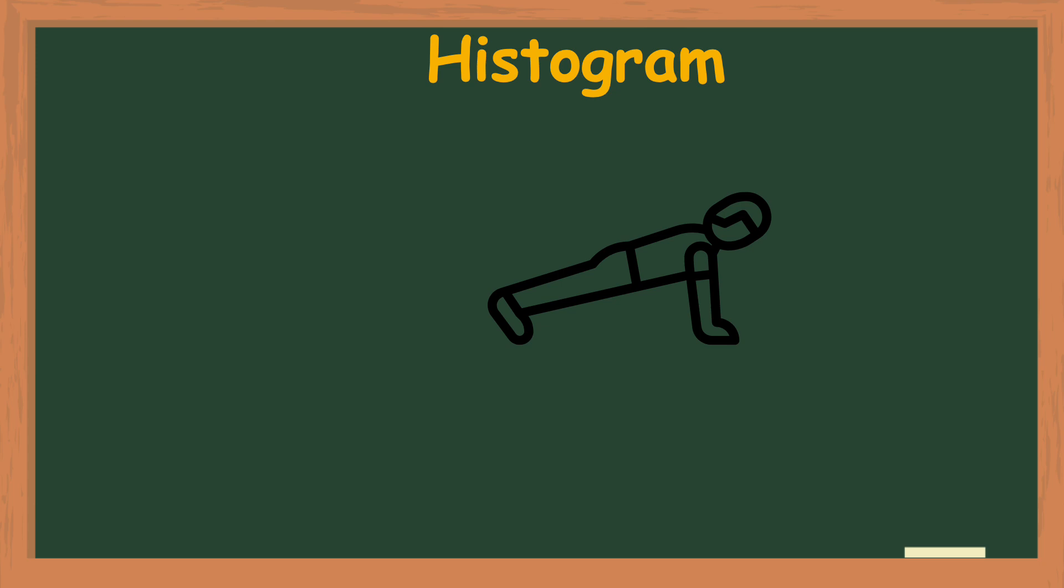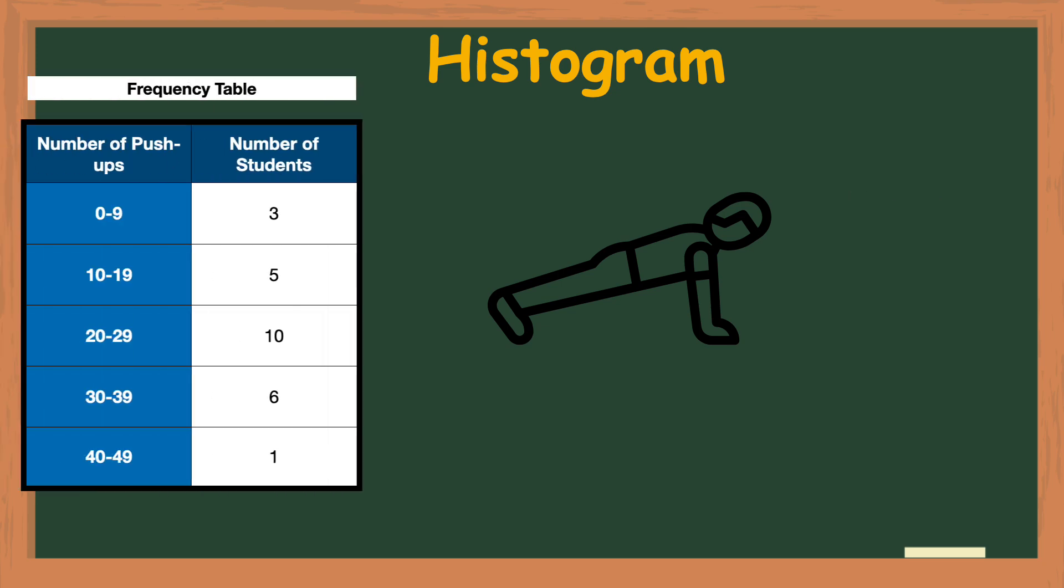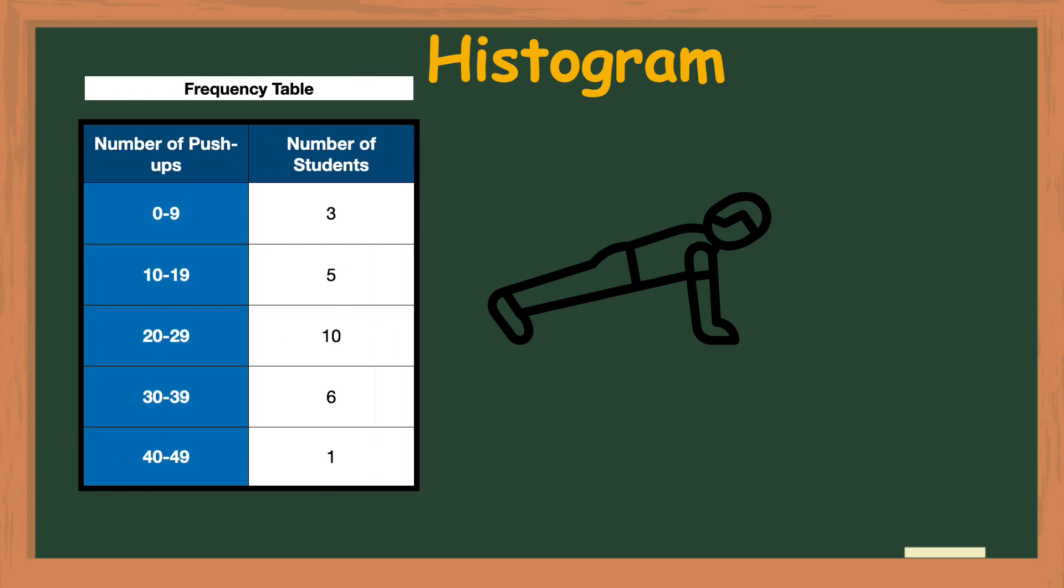The information or data from that collection is shown here in this frequency table. The column on the left represents the range of values for the number of push-ups completed and the column on the right side represents the number of students who completed the push-ups in each range.